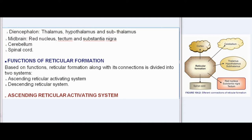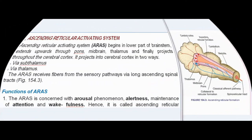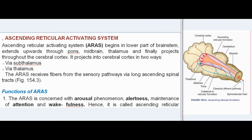Functions of Reticular Formation: Based on functions, reticular formation along with its connections is divided into two systems — Ascending Reticular Activating System (ARAS) and Descending Reticular System. ARAS begins in the lower part of the brainstem and extends upwards through pons, midbrain, thalamus, and finally projects throughout the cerebral cortex — via subthalamus and via thalamus. ARAS receives fibers from sensory pathways via long ascending spinal tracts.